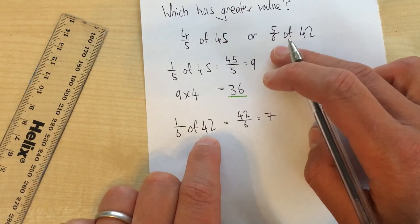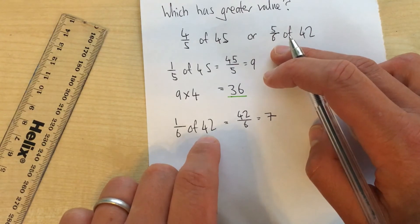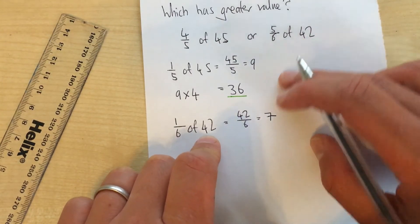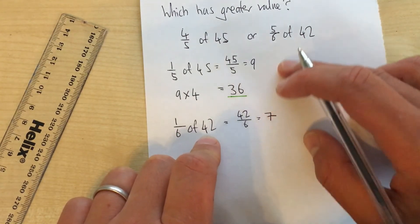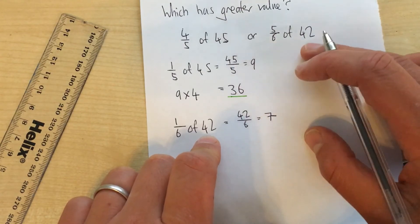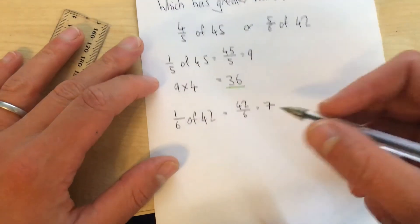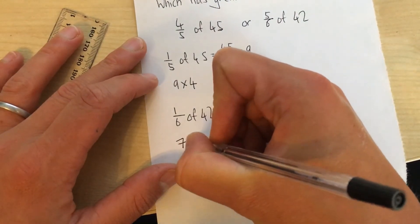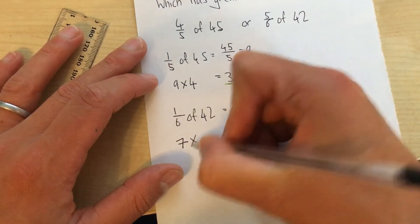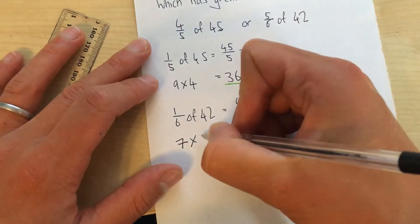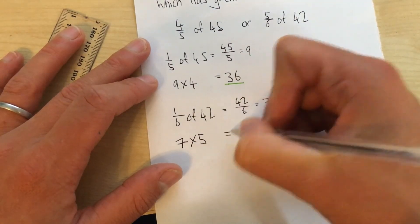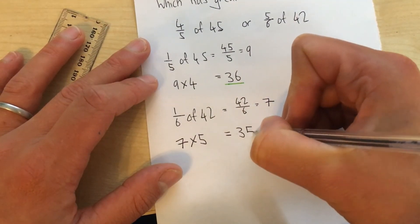But I need 5 sixths. Well, I could do 42 minus 7 to get my 5 sixths, because 42 represents 6 sixths. But to stick with my method, I'm going to take the value of 1 sixth and multiply it by the numerator. In this case, 5. And 7 multiplied by 5 is 35.